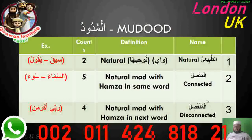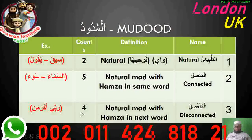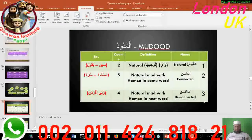Al-Madd Al-Munfasil is disconnected Madd — it is Madd Tabi'i followed by Hamza but in the next word, like 'Rabbi.' Here Ya is the Madd letter preceded by Kasra, and followed by Hamza in the next word, so you do it for four counts. To summarize: Madd Tabi'i is two counts, Madd Muttasil (connected) is five counts, and Madd Munfasil (disconnected) is four counts. Jazakum Allahu Khayran.